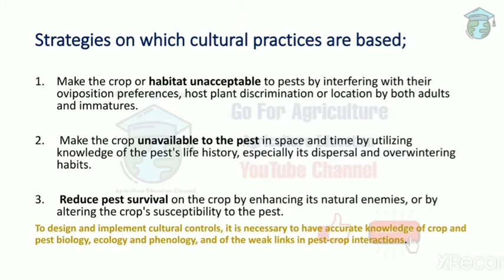There are three strategies on which cultural practices are based. First, make the crop unacceptable to the pest. Second, make the crop unavailable to the pest. Third, reduce pest survival by increasing natural enemies. These three strategies will be discussed in the upcoming slides with examples.